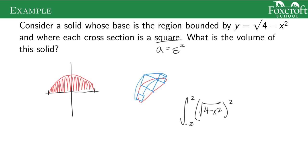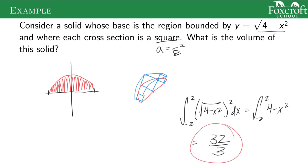These problems seem really difficult because of the weird base and cross-section situation, but if you think about what is the area of the cross-section — it's the side squared — you take what the side is and square it, then add it up over the space from negative 2 to 2. The square root cancels, so the integral from negative 2 to 2 of (4 minus x squared) dx gives 32 over 3, which is the volume of that solid.